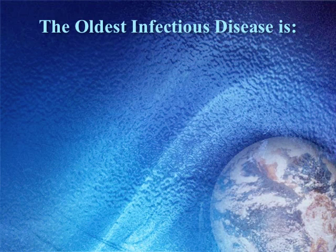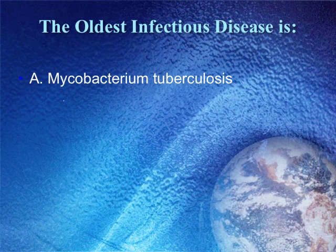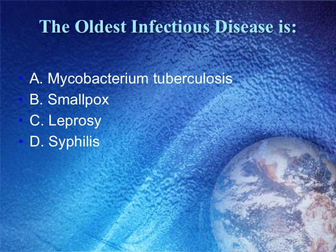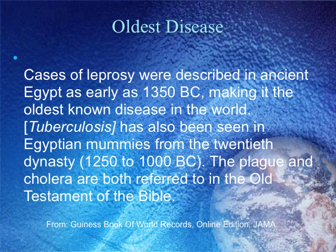The oldest infectious disease is: A, Mycobacterium tuberculosis; B, smallpox; C, leprosy; or D, syphilis? The correct answer is C, leprosy. Cases of leprosy were described in ancient Egypt as early as 1350 B.C., making it the oldest known disease in the world. TB has also been seen in Egyptian mummies from the 20th dynasty. The plague and cholera are both referred to in the Old Testament.